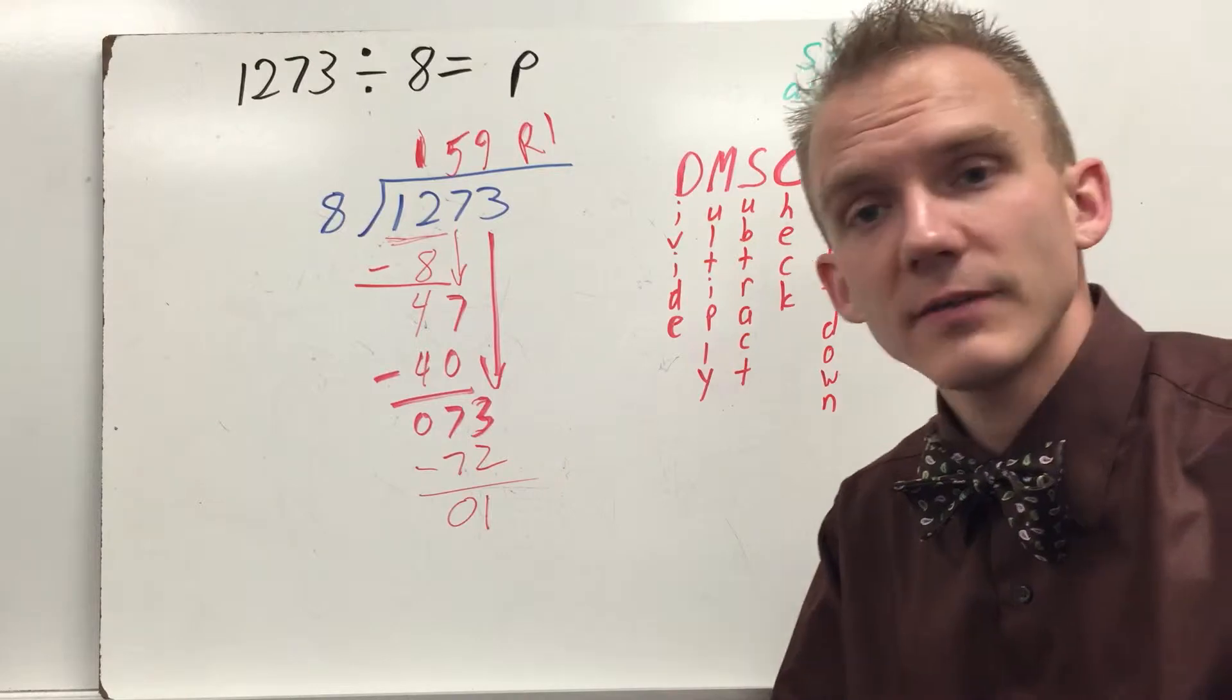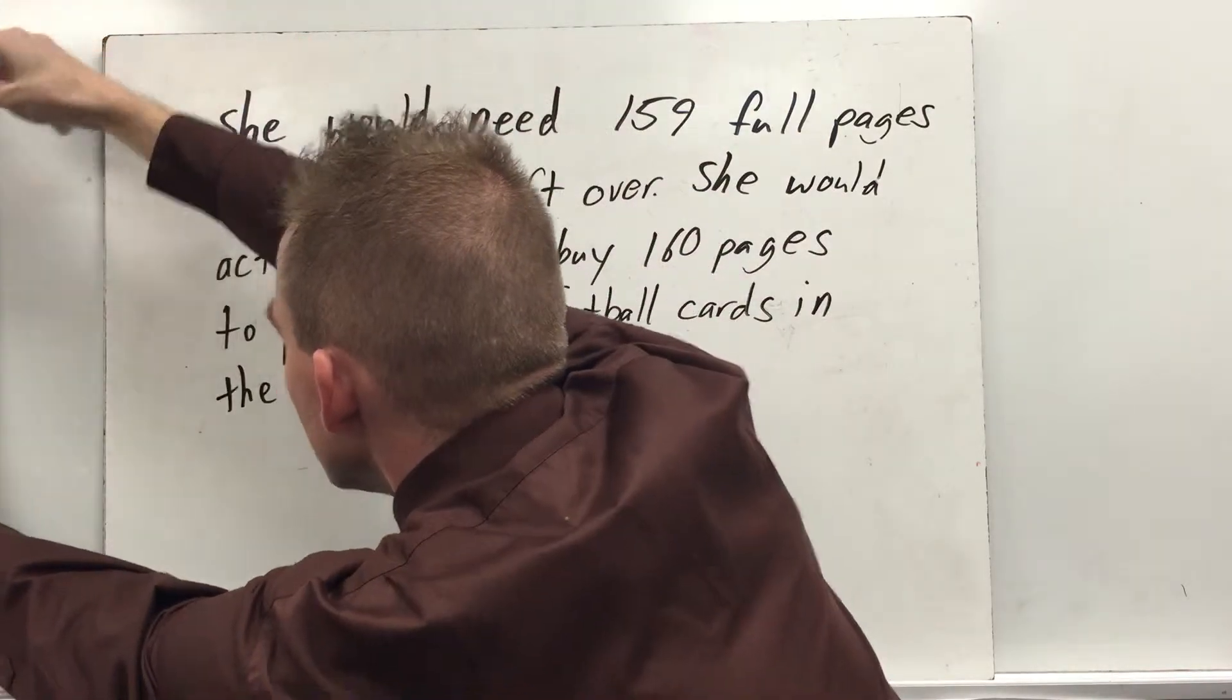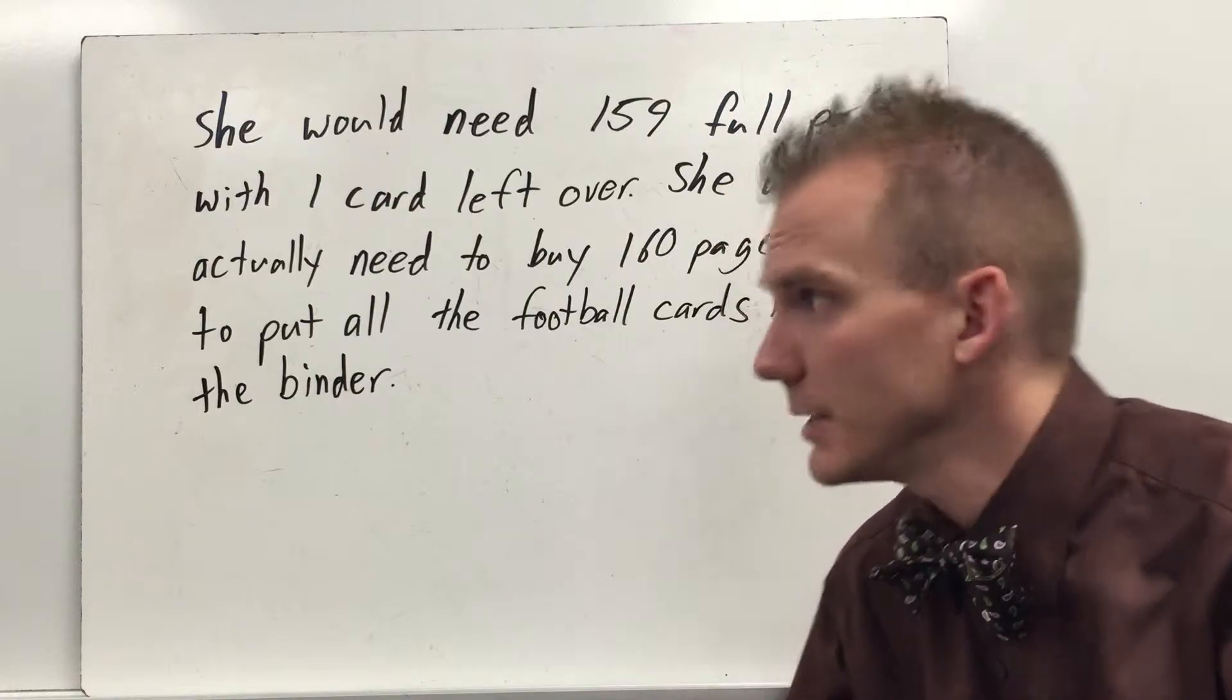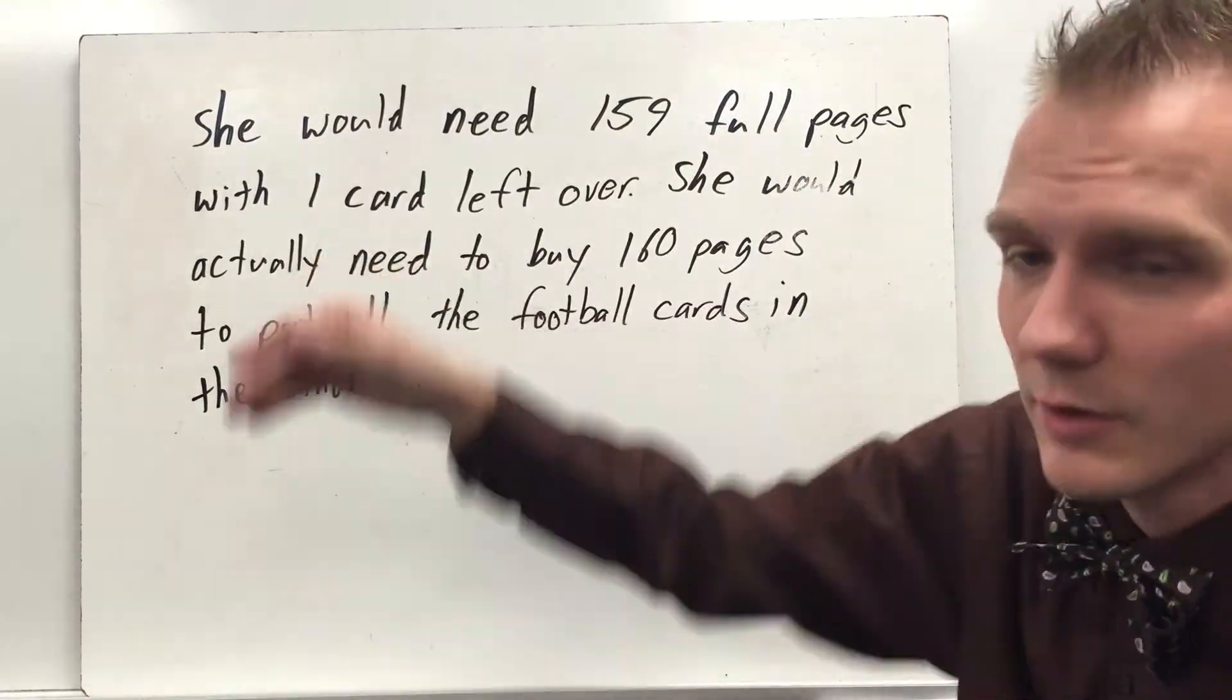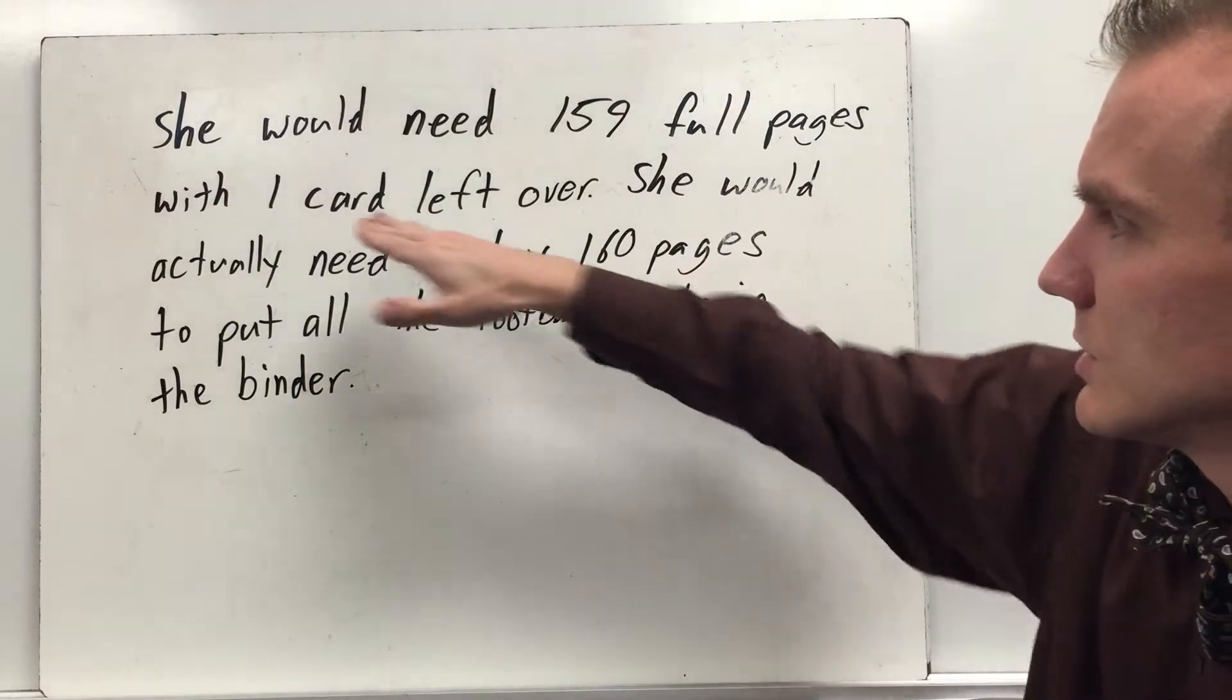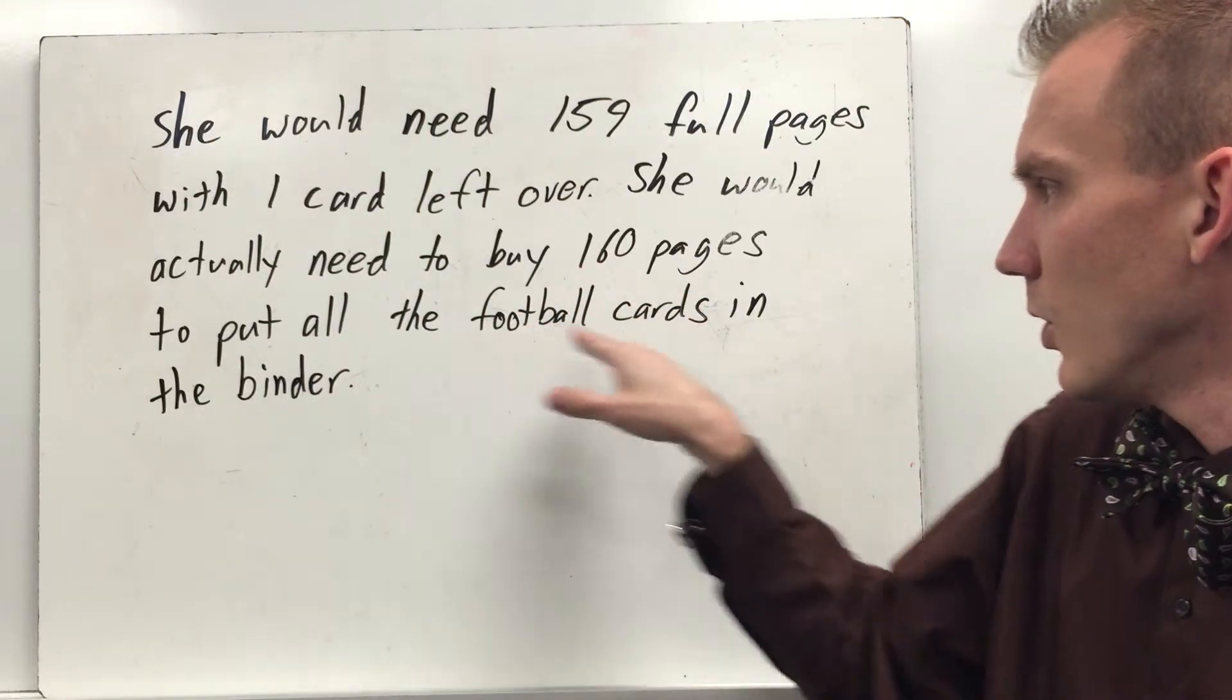But you have to go back and think about what that word problem was asking. And don't forget, Does McDonald's serve cheeseburgers is how you do the standard algorithm with long division. So we're going back to that problem where we had Aubrey putting her football cards into pages in a binder. She would need 159 full pages because that was our quotient. But there would be one card left over. She would actually need to buy 160 pages because you don't want to just leave that card out. So 159 remainder 1 actually would answer the question. She would need 160 pages to put all the football cards in the binder.